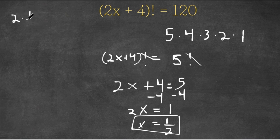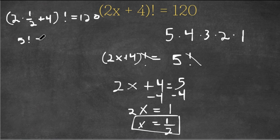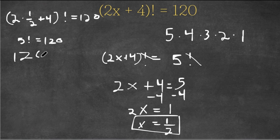So we have 2 times 1/2 plus 4, factorial, is equal to 120. Now 2 times 1/2 is simply just 1, so we have (1 + 4)! which is 5! is equal to 120, and 5! is indeed 120. So 120 equals 120, which confirms our answer is x equals 1/2.